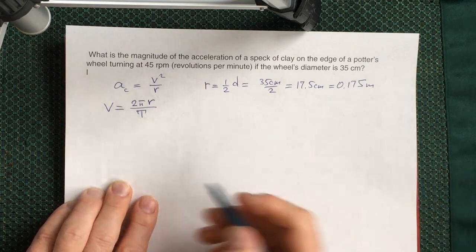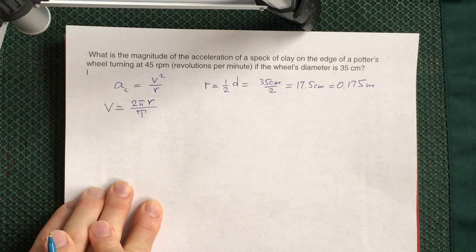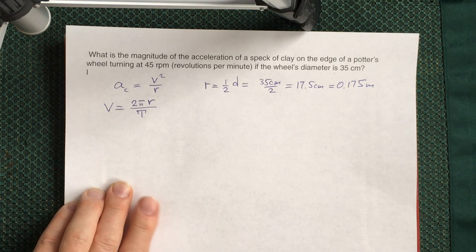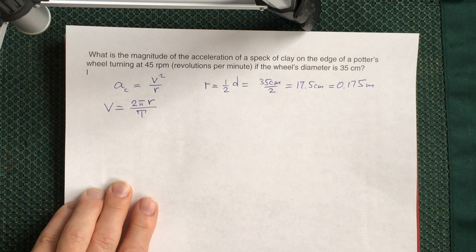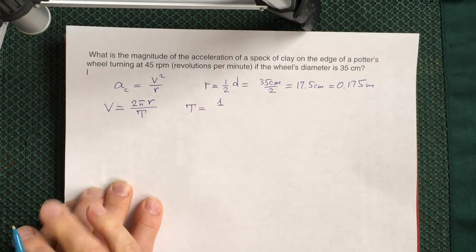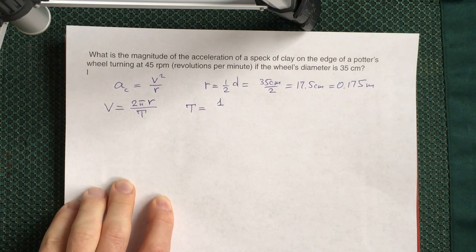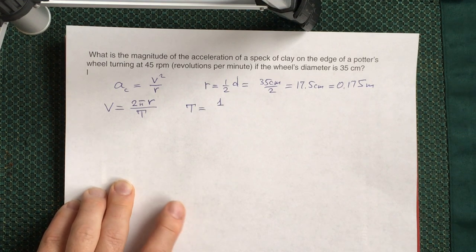So you have r and the only thing you need is period. Now you are given a quantity which tells you how many revolutions happen per minute. You can find period of rotation from this quantity if you take one minute and divide by number of revolutions per minute. And of course you have to convert everything to seconds because period has to be in seconds, not minutes.